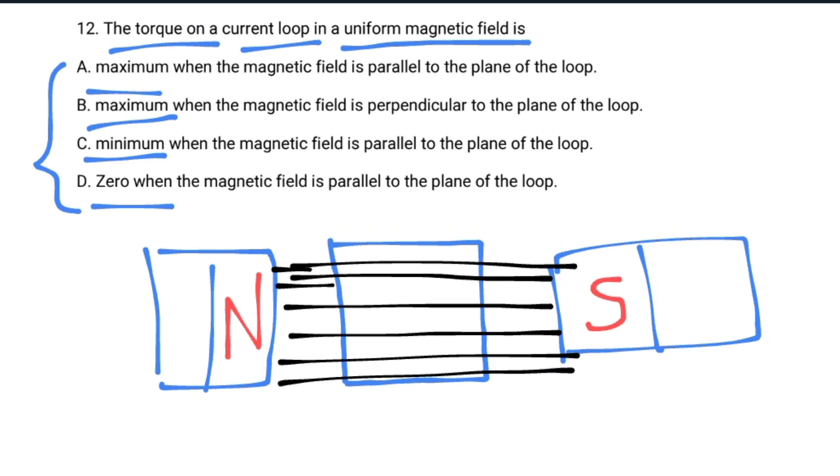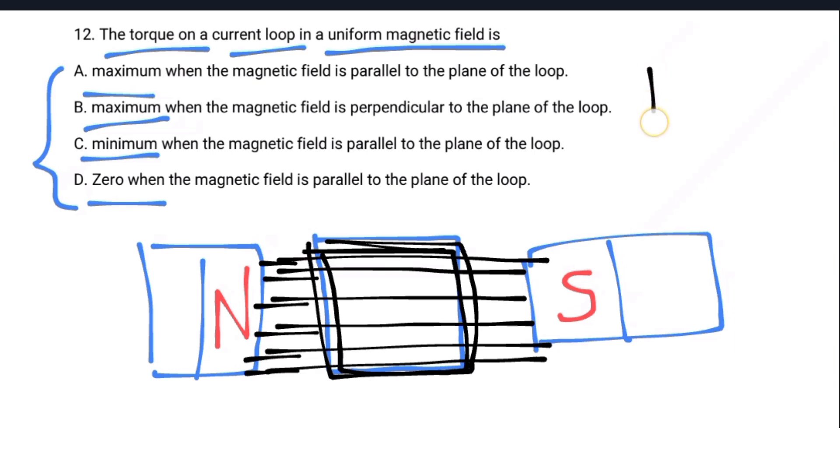The loop rotates when current flows through it. The magnetic field and current direction are perpendicular, creating force. The force direction depends on whether the current is going into or out of the page on different sides of the loop.